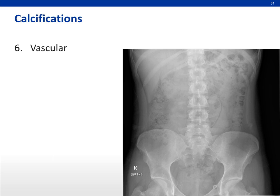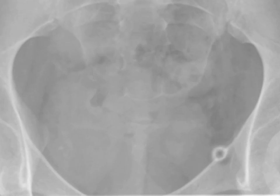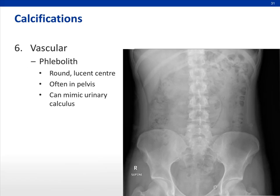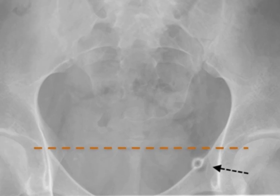For vascular calcifications, we have phleboliths — calcifications within the venous system that commonly appear in the pelvis. They tend to have a rounded shape with central lucency. If they are very close to the urinary bladder, you might mistake them for a urinary calculus. However, urinary calculi are usually more ovoid or linear in shape and don't have a lucent center. You can also tell by location: draw a line along the ischial spine, and anything below is unlikely to be a urinary calculus, because the vesico-ureteric junction ends above the level of the ischial spine.